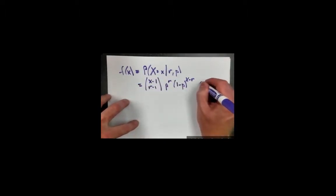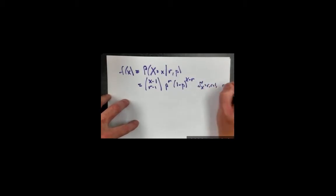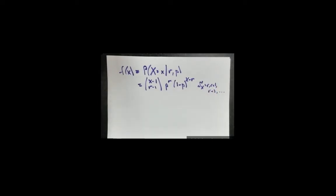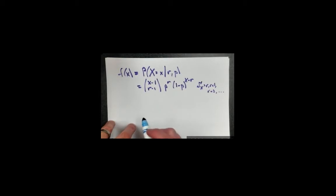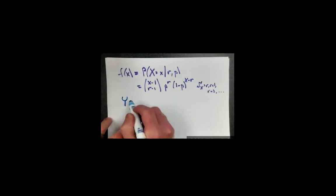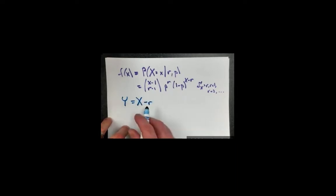The support for this random variable X is the values r, r plus 1, r plus 2, all the way up to infinity. As it turns out, this may not be the best way to calculate the expected value. My life would be a little easier if I can start counting from 0 instead of 1. So I'm actually going to define a slightly different random variable: Y, which is simply X minus r.